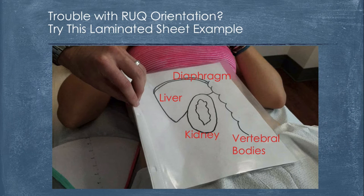And so if you're having trouble with the right upper quadrant orientation, especially the sub-xiphoid view, things that are sort of flipped on the screen, I find this to be very helpful.